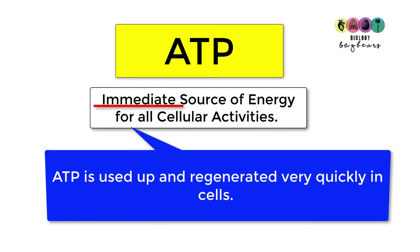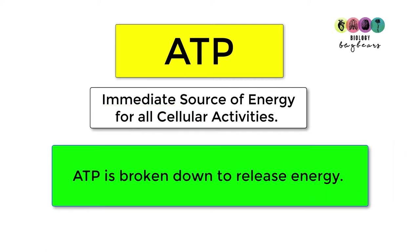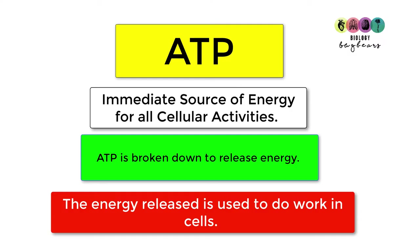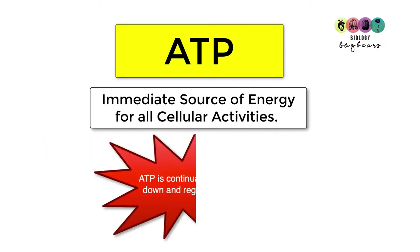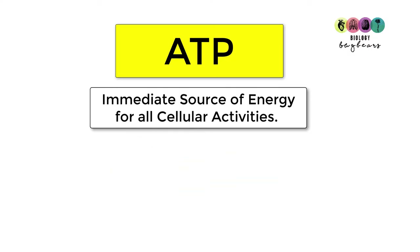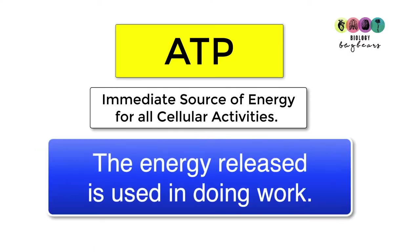The word 'immediate' tells you a little about how ATP functions. ATP is a molecule that is broken apart to release energy, and that energy is used to do work within the cells. It's then quickly regenerated or remade because a constant supply is needed by the cells.